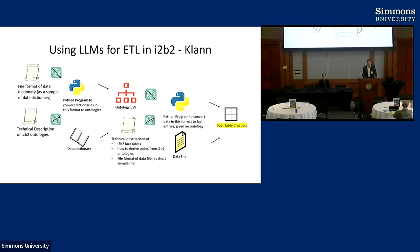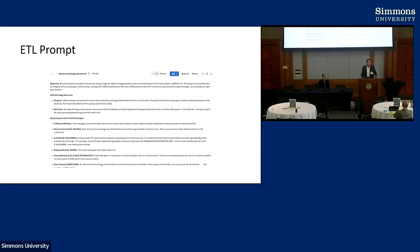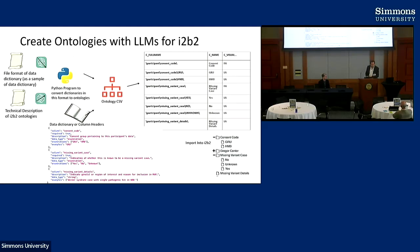Jeff Klan, who spoke about the Enact Data Quality Project, has been creating amazing ETL prompts. This prompt tells a large language model what the data is supposed to look like — it almost describes what the I2B2 manuals say, but it's a prompt. When you apply this to a data dictionary, the large language model can actually generate the ontology by following that prompt. You can see the ontology in the upper right-hand corner expressed starting from what's in the lower left.